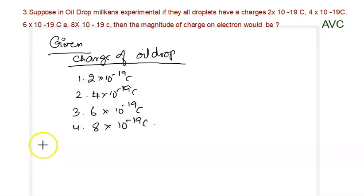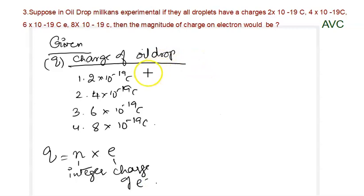As we know, the charge of the oil droplet Q equals the product of the integer n into the charge of electron. We write it in this equation form.